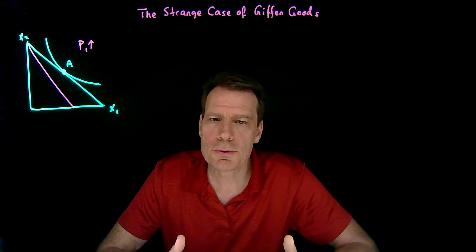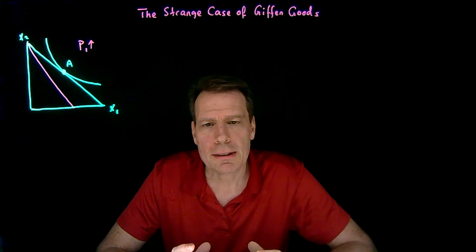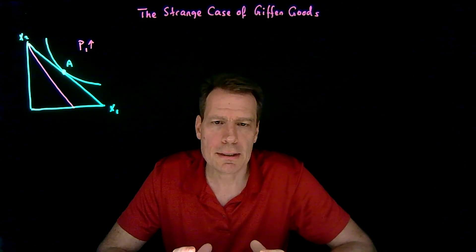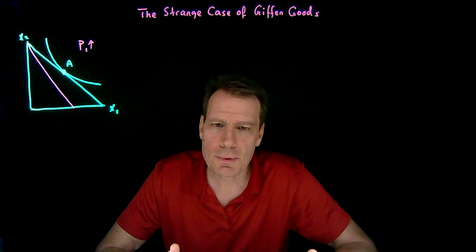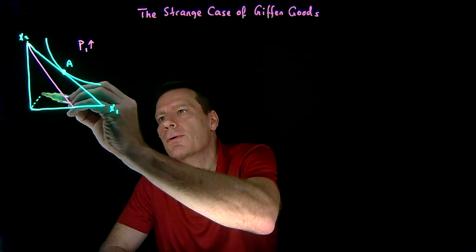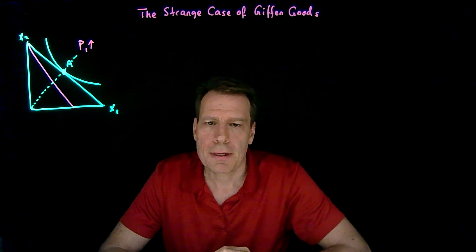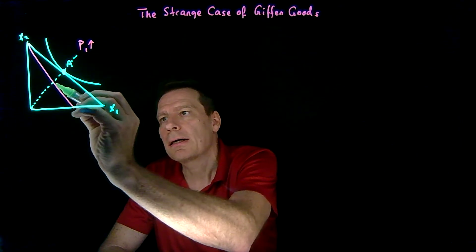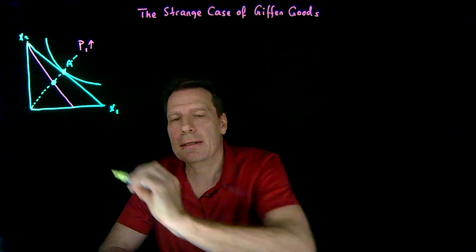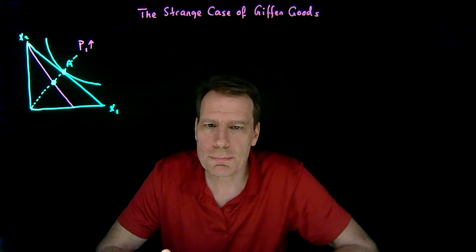Now suppose I told you that consumer's preferences were homothetic. A lot of students hear 'homothetic' and immediately rush to the idea that they're going to have to draw a ray through the origin. And eventually they will. But when you rush, you might draw that ray through the origin through point A and say, 'since the tastes are homothetic, I'm going to end up optimizing at this point on the final budget constraint.' But that wouldn't be right.